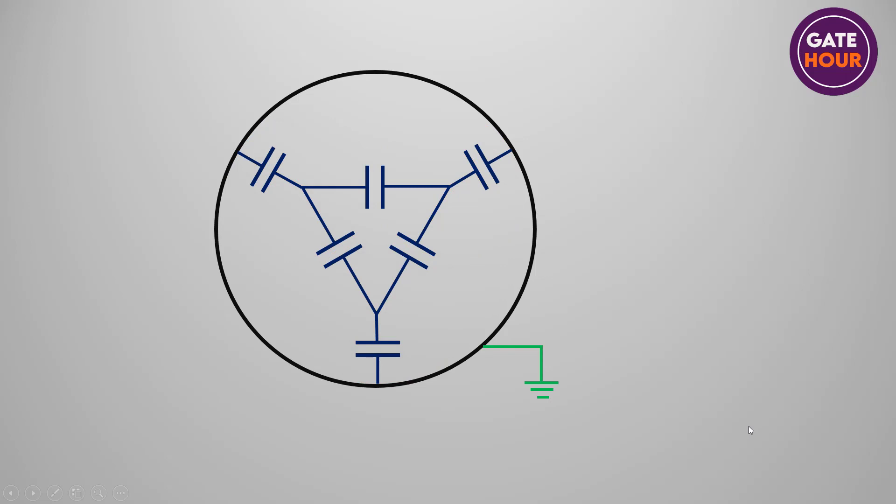Thus, there are six capacitances formed: C1 between the cores, and C2 between cores and the armor. Now, the delta-connected capacitor can be converted into equivalent star. Then the capacitance value becomes 3C1 in each branch.